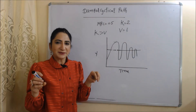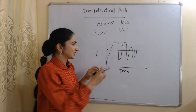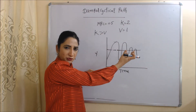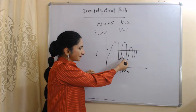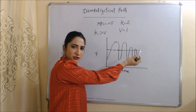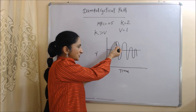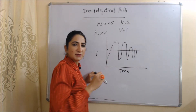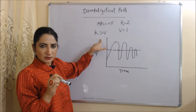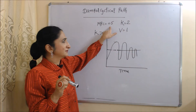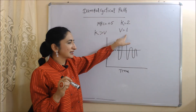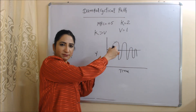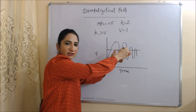In the damped cyclical path, the economy initially produces bigger cycles, but they slowly become shorter. Initially the duration of expansion and contraction is large, but it gradually becomes shorter. This happens because the multiplier is greater than the accelerator — MPC is 0.5, so multiplier is 2 and accelerator is 1. Because the multiplier is high compared to the accelerator, the economy initially produces bigger cycles that slowly become smaller.